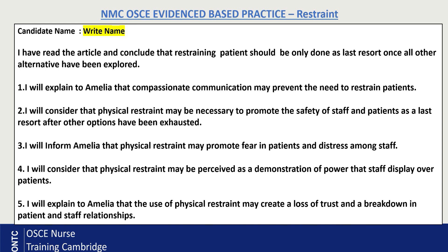Now for our recommendations. The first point: I will explain to Amelia that compassionate communication may prevent the need to restrain the patient. This means that if we can have a caring and compassionate conversation with the patient, helping them understand how their behavior may put them at risk, and that behavior changes as a result, that may prevent the need for restraint altogether.